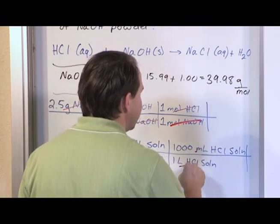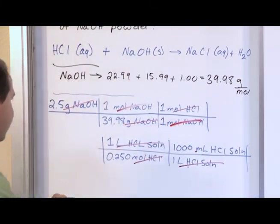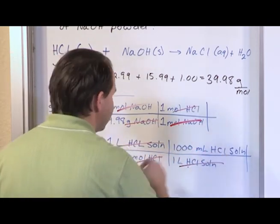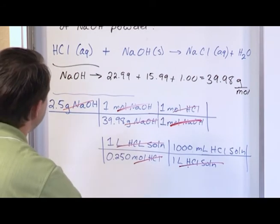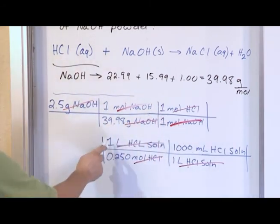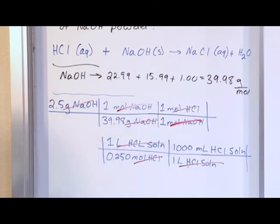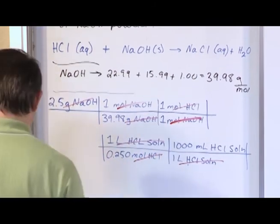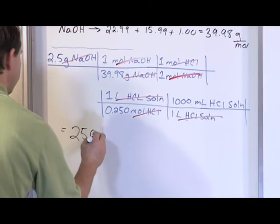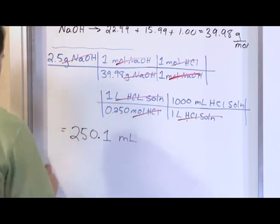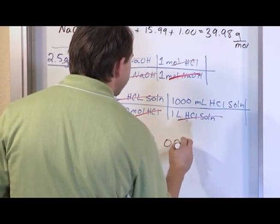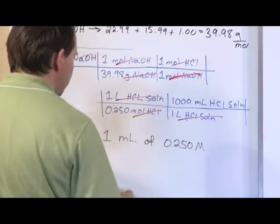So we have one liter of this, one liter of this, one liter of this. So everything is cancelled. The only thing I have left is milliliters of HCl solution. And that's exactly what I want. So if you take 2.5 times 1 divided by this, times 1 divided by 1, times 1 divided by 0.25, times 1,000 divided by 1...